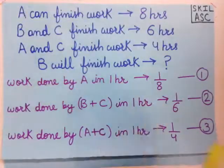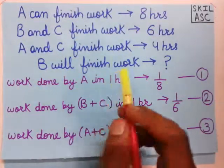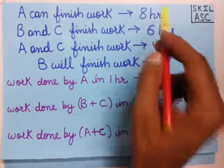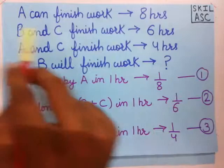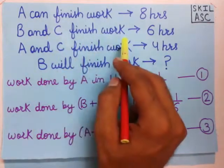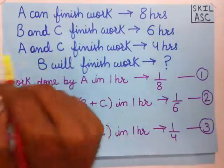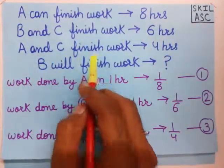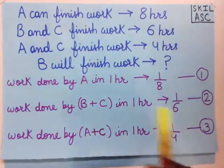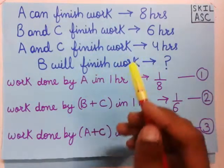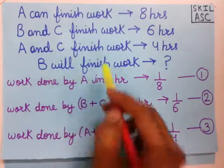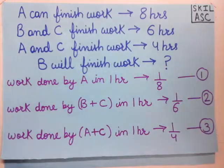In the question we are given that A can finish the work in 8 hours, B and C together can finish the work in 6 hours, and A and C together can finish the work in 4 hours. We have to find how long will B take to finish the work.